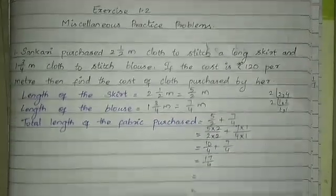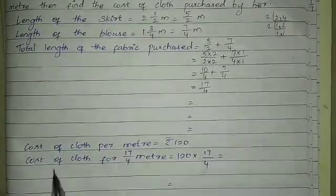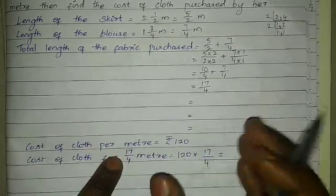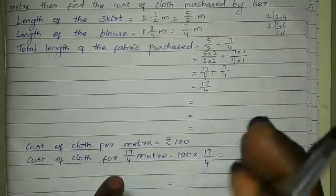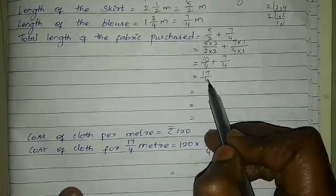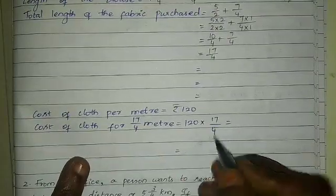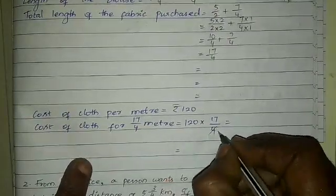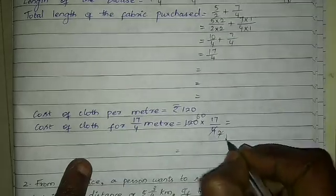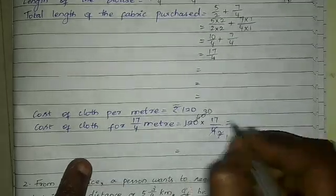Now we multiply to find the total cost. 17/4 multiplied by 120 — that is, 2 times 60, giving us the final cost calculation.